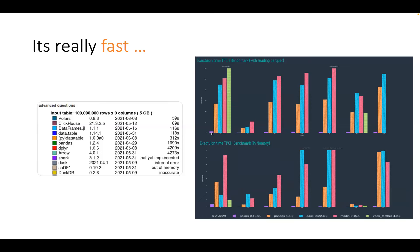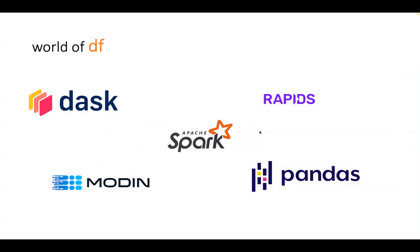In this chart, the purple bar almost touching the x-axis is the performance Polars can give you. We have many DataFrames in our open source ecosystem — we have Dask, Pandas, Modin which makes Pandas distributed, RAPIDS if you want to use GPUs, and Spark if you want computation across multiple systems rather than within one computer.